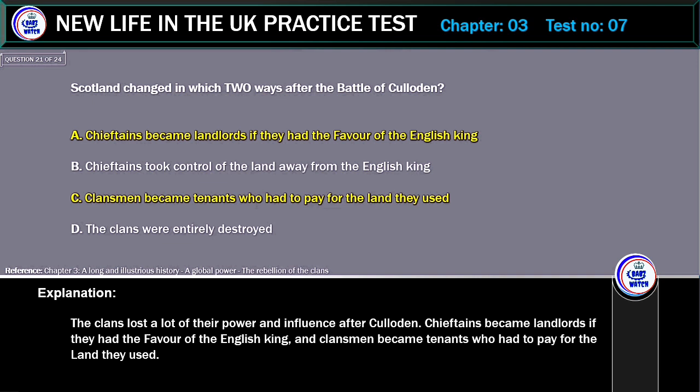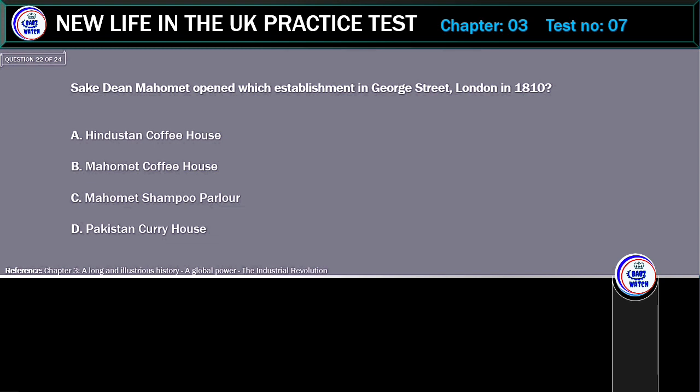Explanation: The clans lost a lot of their power and influence after Culloden. Chieftains became landlords if they had the favour of the English king, and clansmen became tenants who had to pay for the land they used. Who opened the Hindustan Coffee House in George Street, London in 1810?